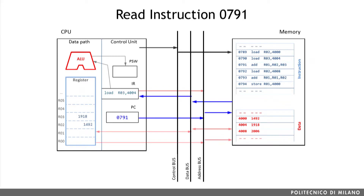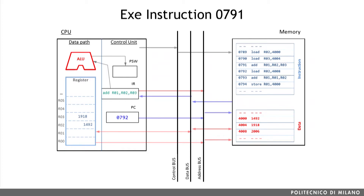Once the execution is completed, we are now ready to start the execution of the next instruction, which is stored at address 0791. As with the previous two instructions, we are accessing the memory at the address stored in the program counter, which is 0791. The control unit is sending a read command on the control bus to load the necessary information from the memory to the latch register. Now we have the new instruction stored in the instruction register, and once more the program counter is updated to point to the next instruction. What is interesting about this new instruction is that it is no longer a load, but an add.